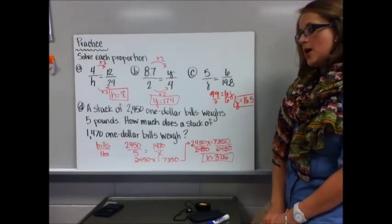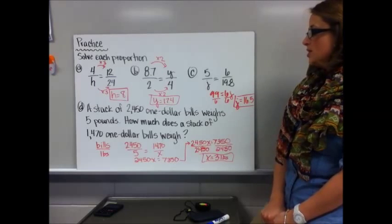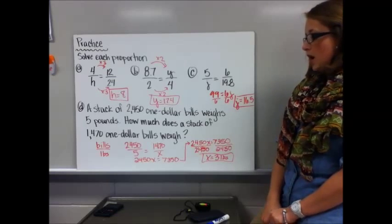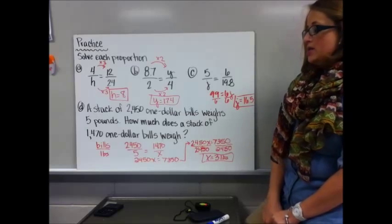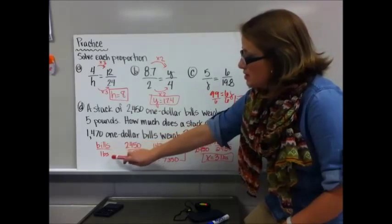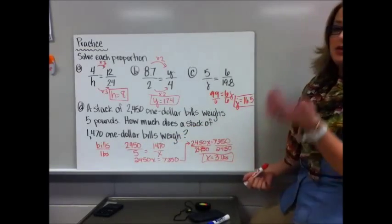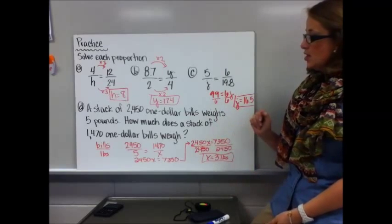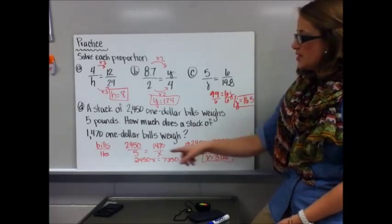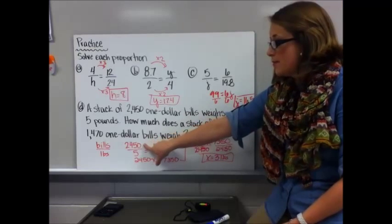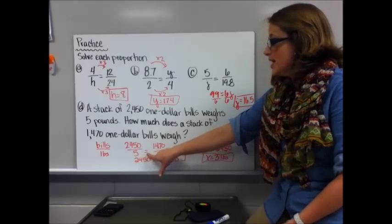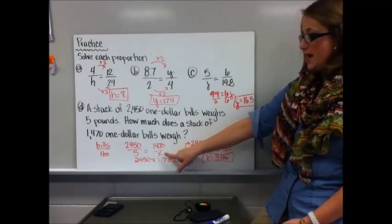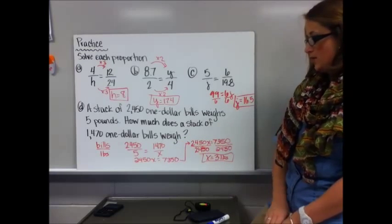For the word problem D: a stack of 2,450 one-dollar bills weighs 5 pounds. How much does a stack of 1,471 bills weigh? Set up the framework comparing bills to pounds. I put 2,450 over 5 equal to 1,470 over x, where x represents the weight of the 1,470 bills.